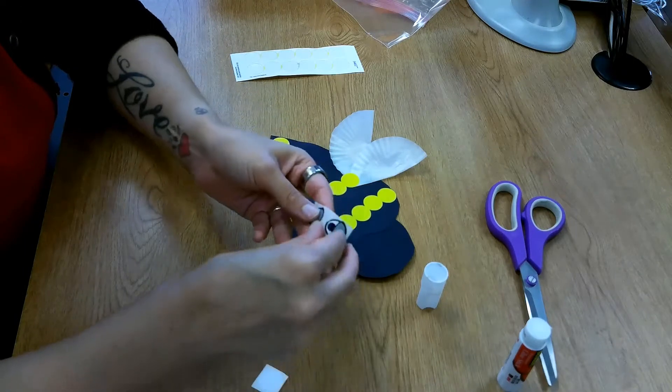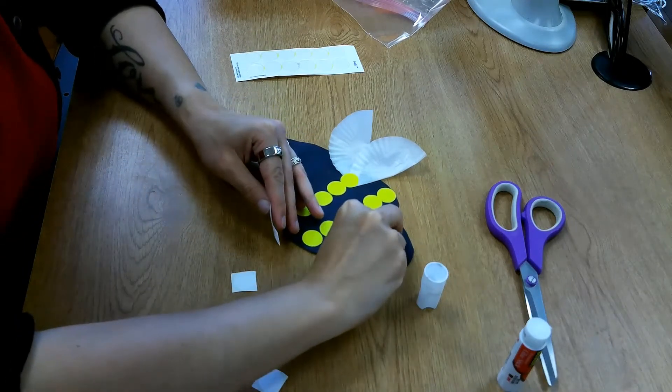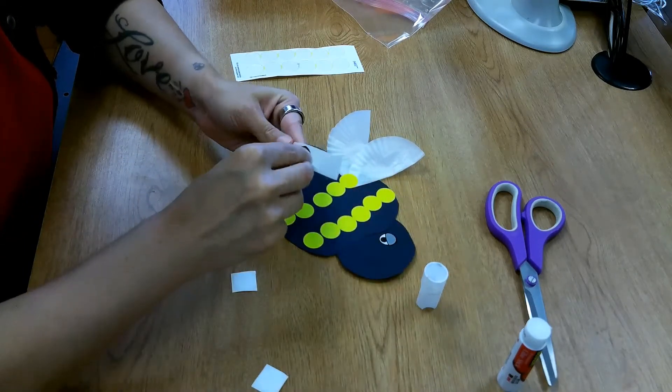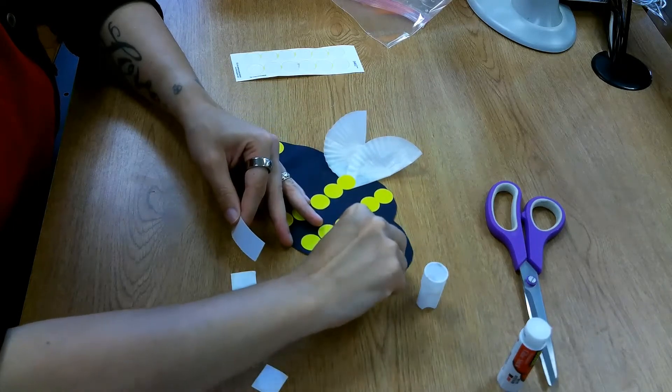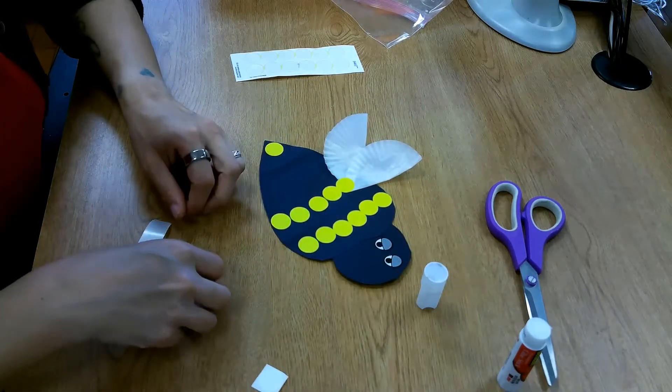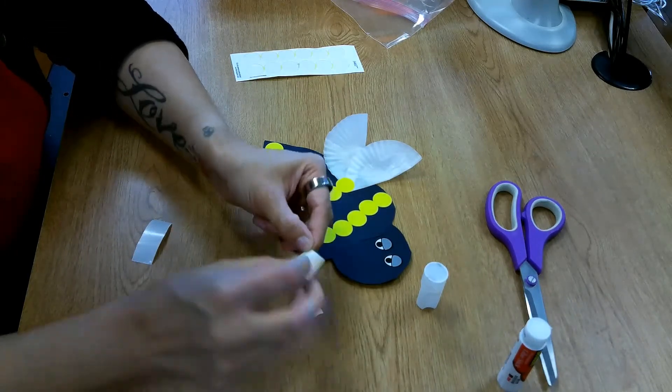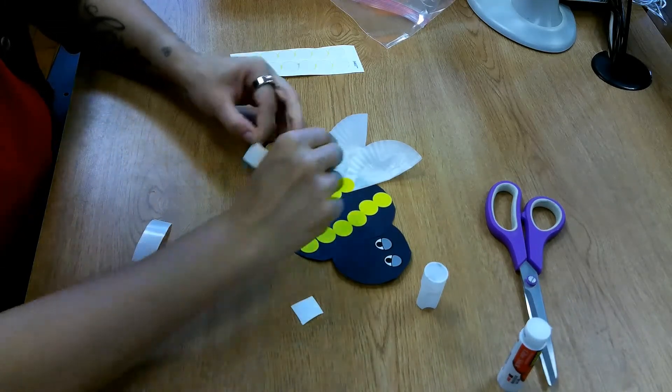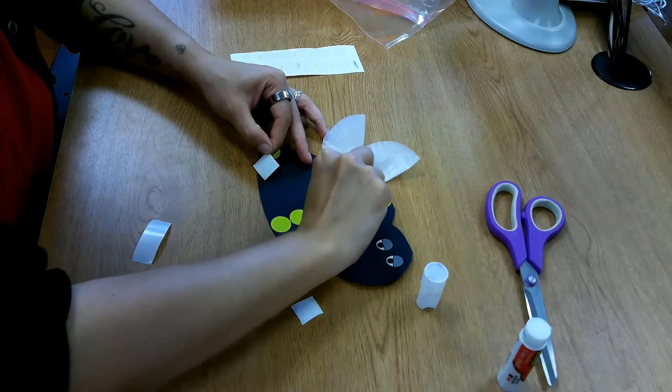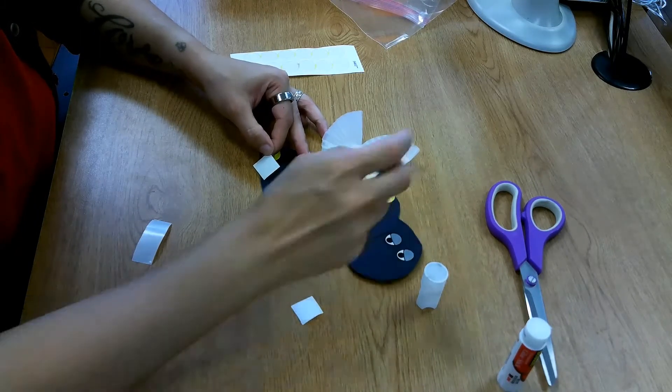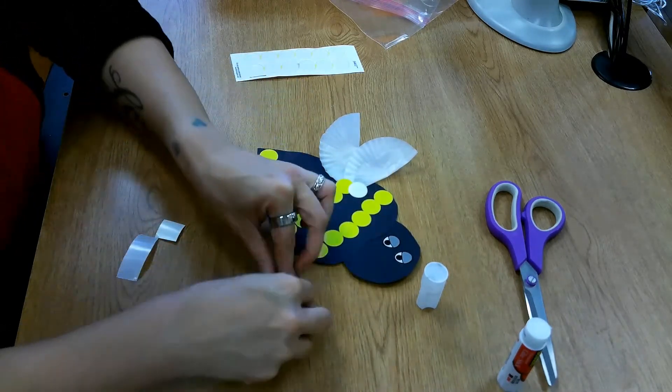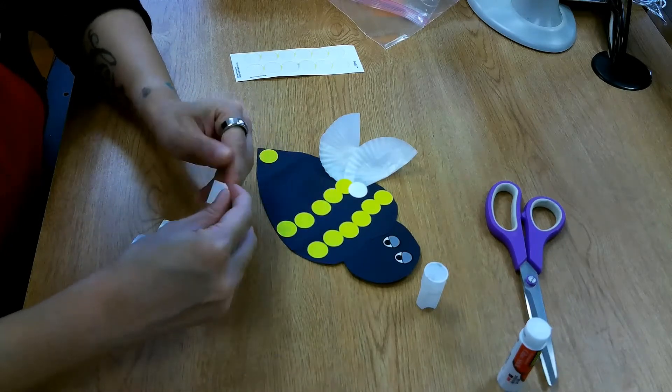And then we've got some eyeball stickers. So we can stick those on. And some white circle stickers that you can use to draw on eyeballs if you'd prefer, or you can use them to help attach your wings and just reinforce them a little bit more.